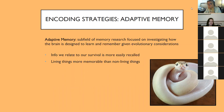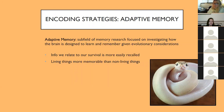Adaptive memory is a subfield of memory research focused on investigating how our brains have evolved to learn and remember things important to our survival. Things that are going to keep us alive are more easily recalled, and living things are more memorable than non-living things. A snake is potentially going to stick in your memory more easily because it could impact your survival.